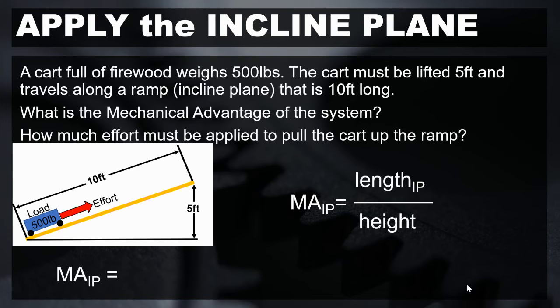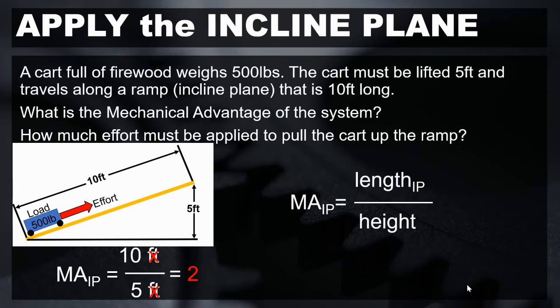In this case, mechanical advantage for the inclined plane is the 10 feet length of the inclined plane divided by the 5-foot vertical that it has to overcome. The feet will cancel out, and we're left with a mechanical advantage of 2.